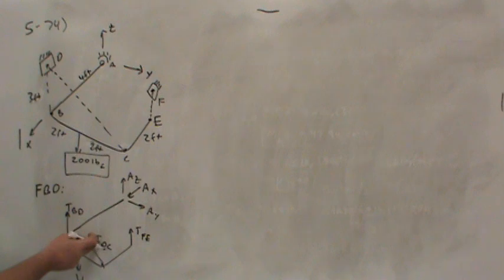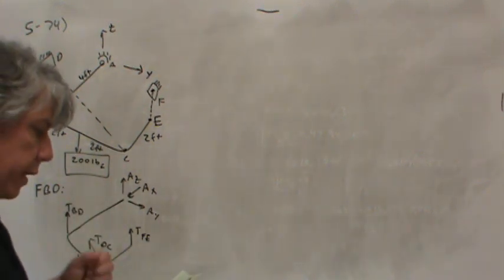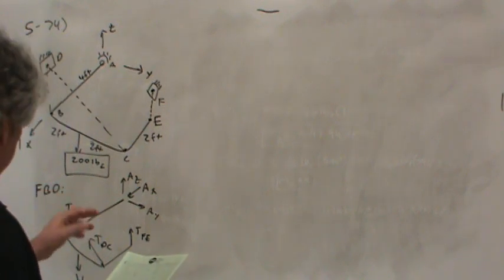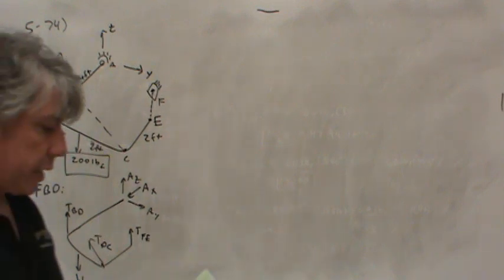And then a tension in FE. So we know the weight, and there are one, two, three, four, five, six unknown forces, reaction forces. Three of them are forces in cables, so I called those tensions, and three are forces in the X, Y, and Z direction.